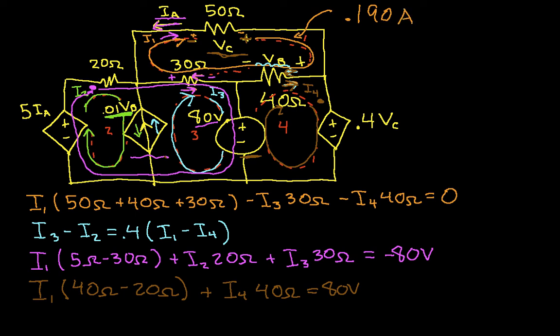I2 is minus 1.09 amps, I3 is minus 1.78 amps, and I4 is 1.90 amps.